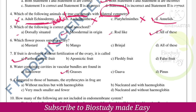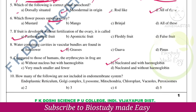Compared to those of humans, the erythrocytes in frog are nucleated RBCs with hemoglobin pigment.